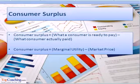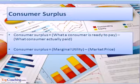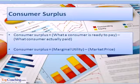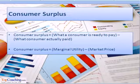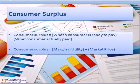The next subtopic is consumer surplus. Consumer surplus stands for the difference between what a customer is ready to pay for a good or service and what the consumer actually pays. Thus, consumer surplus can also be considered as the difference between the marginal utility and the market price of a commodity.